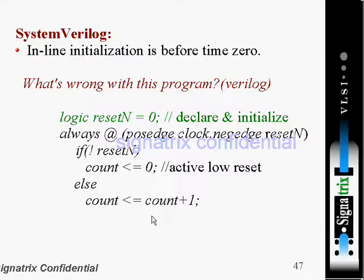Coming to SystemVerilog, inline initialization is before time zero. If you are initializing like that in SystemVerilog, those things will be executed before simulation time. So what's wrong with this program? This is a Verilog 2001 program where we declare reset as zero. In the always block at positive edge of clock or negative edge of reset_n, if negative edge of reset_n occurs, the count value will be assigned to zero, otherwise the count will keep incrementing.